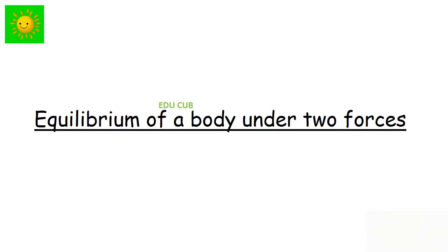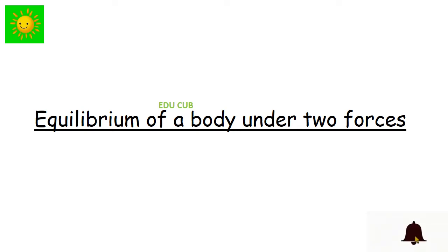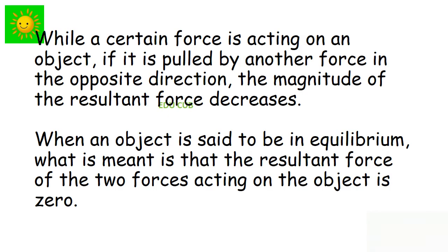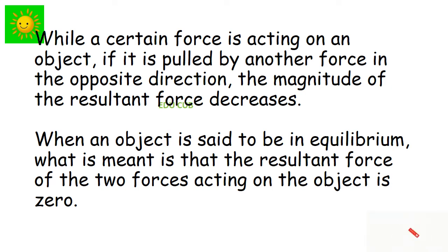Our second subtopic is equilibrium of a body under two forces. We previously learned about the resultant force of two co-linear forces acting on one point. When a force acts on an object and another force acts in the opposite direction, the magnitude of the resultant force decreases. When an object is in equilibrium, the resultant force of the two forces acting on it is zero.